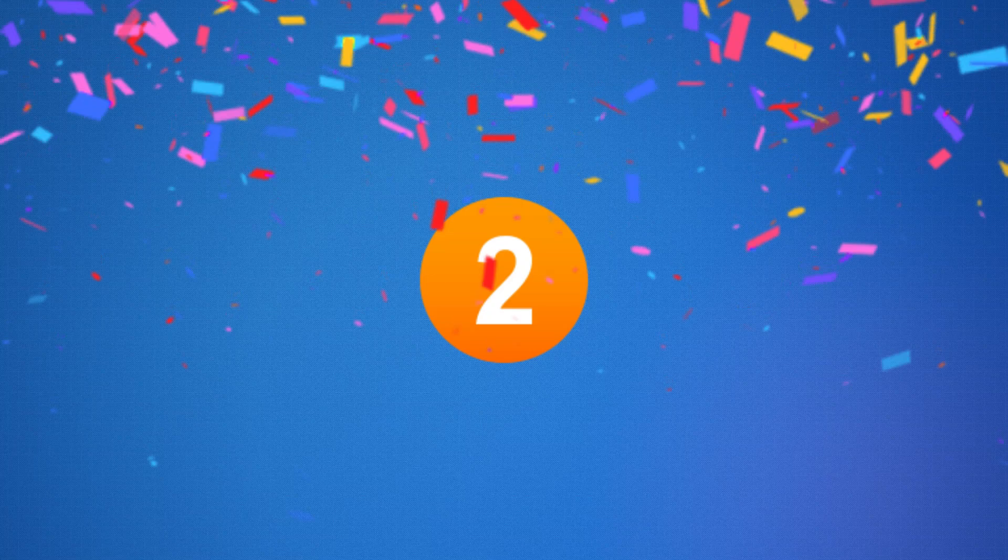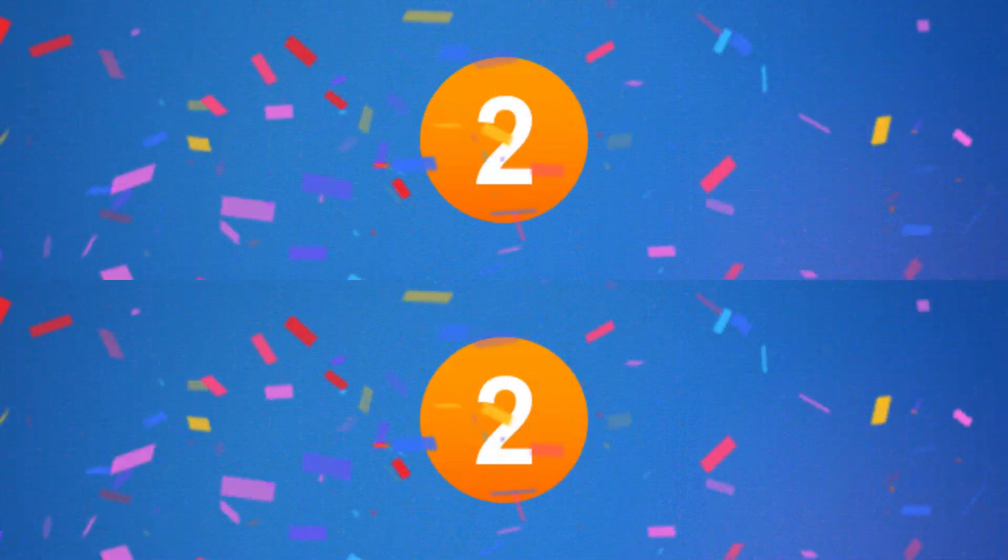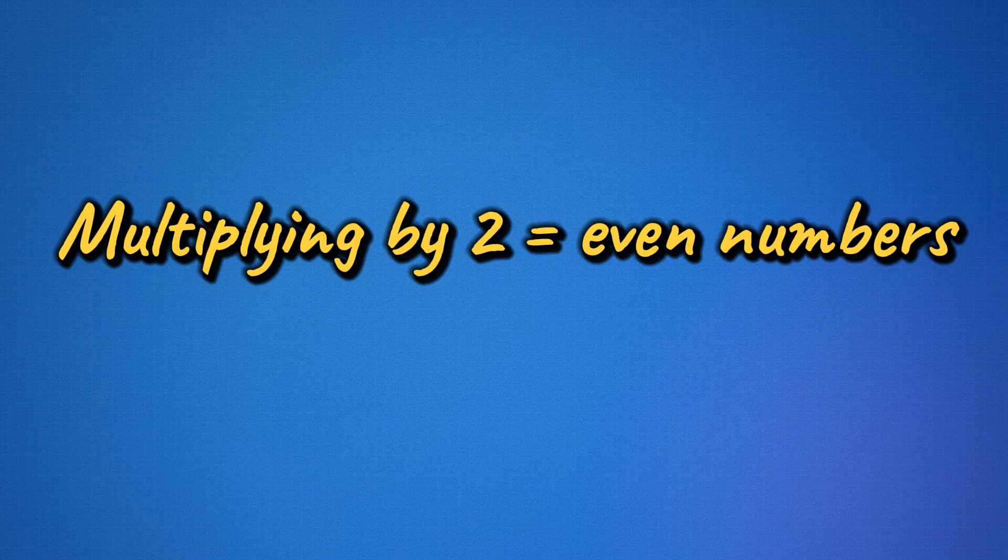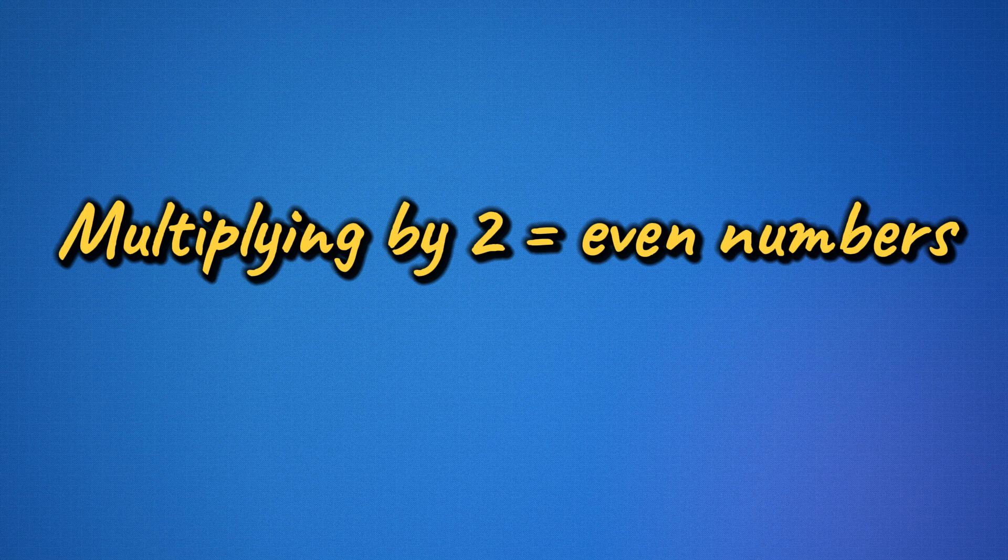When we multiply by two, we are doubling that number by adding it to itself. Something else cool about multiplying by two is that you always get an even number. Always. Cool!